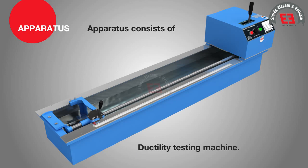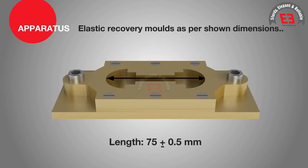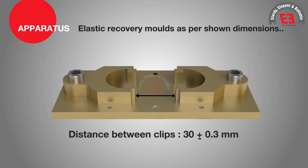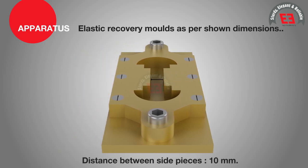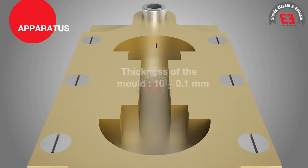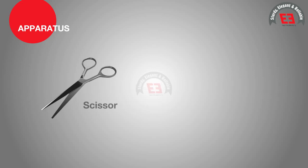Apparatus consists of a ductility testing machine and elastic recovery molds with the following dimensions: length 75 mm plus or minus 0.5 mm; distance between clips 30 mm plus or minus 0.3 mm; width at mouth of clip 20 mm plus or minus 0.2 mm; distance between side pieces 10 mm; thickness of the mold 10 mm plus or minus 0.1 mm. Also required: thermometer, scissors, and scale.